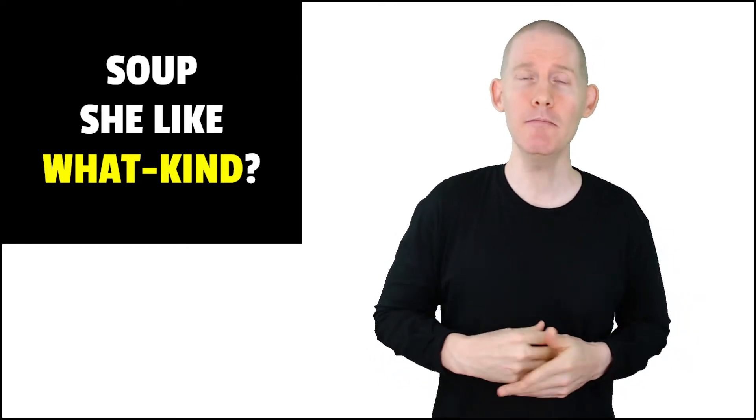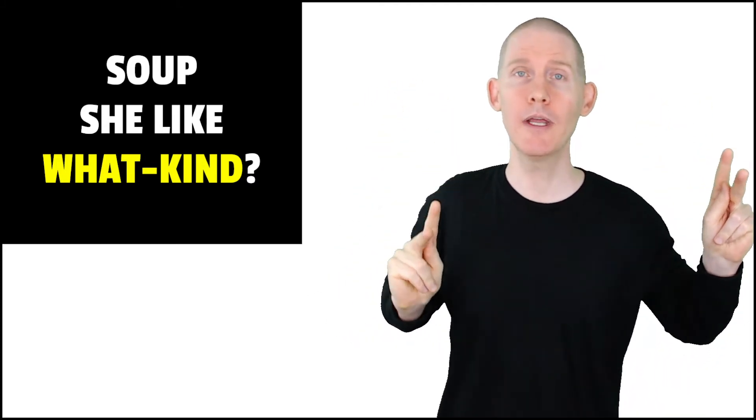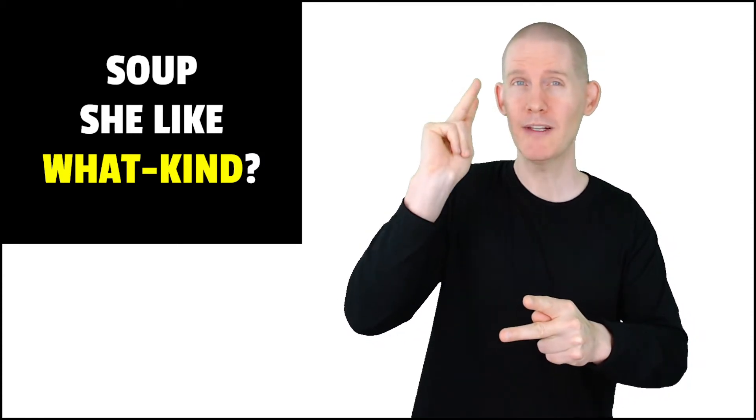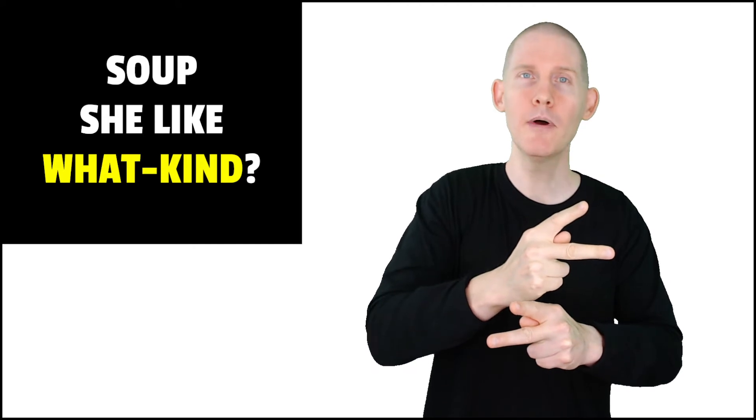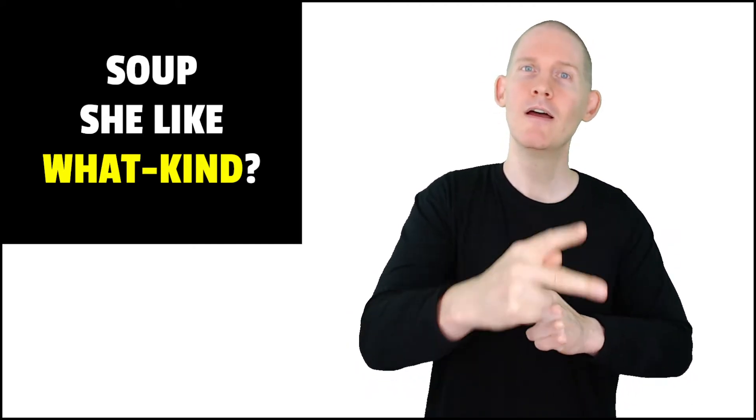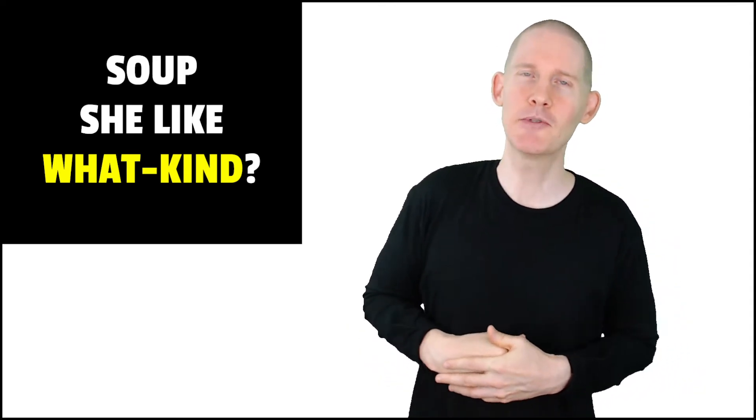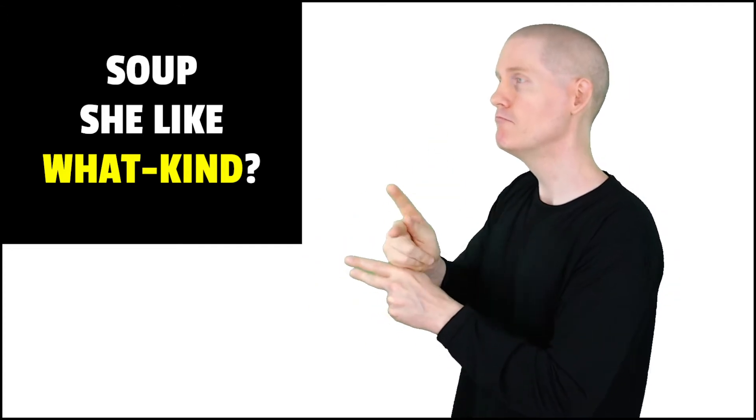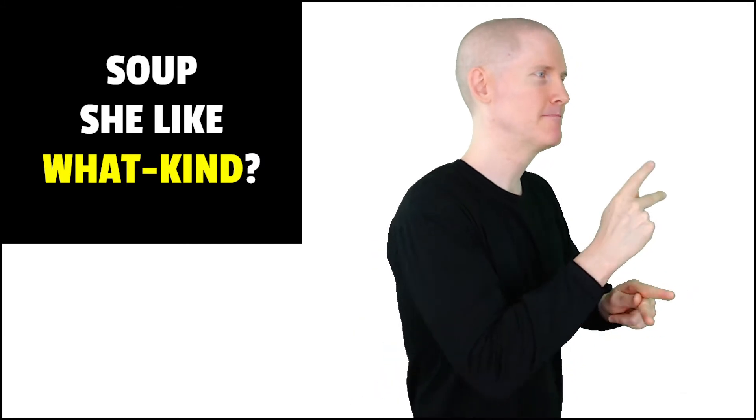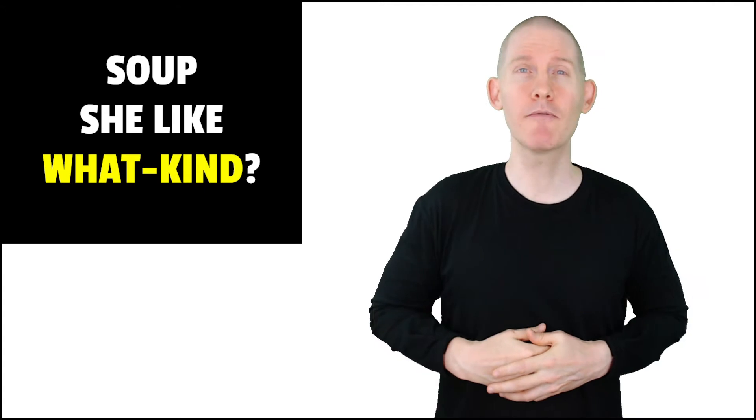Here's how we sign kind. Handshapes are the same. K's from the alphabet, yes, the letter K. Now I'm right-handed, non-dominant hand, put it right there. That one's really not gonna move much. With my dominant hand, my dominant K, I'm gonna put it on top, I'm gonna circle it around, and bop on top. Kind. From the side, other side. So that's the base sign for kind.